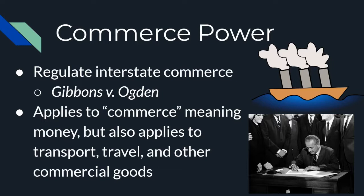Next, we'll talk about commerce power. The Gibbons v. Ogden Supreme Court case, discussed in our textbook, is a landmark case whose decision essentially established that interstate commerce is within Congress's power to control. Congress has power to control commerce not only in terms of money, but also in transport, travel, and the sale and purchase of commercial goods — especially interstate, between the states. This commerce power is definitely very influential for Congress.